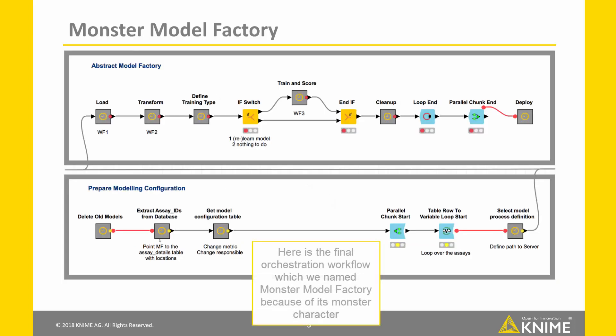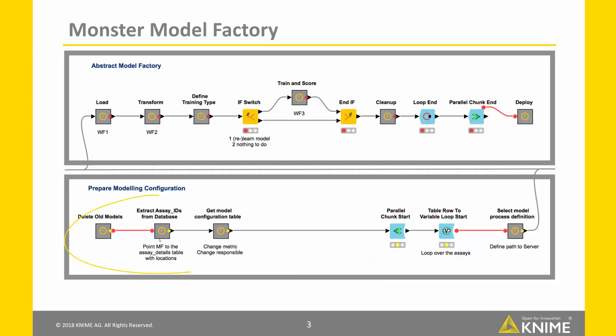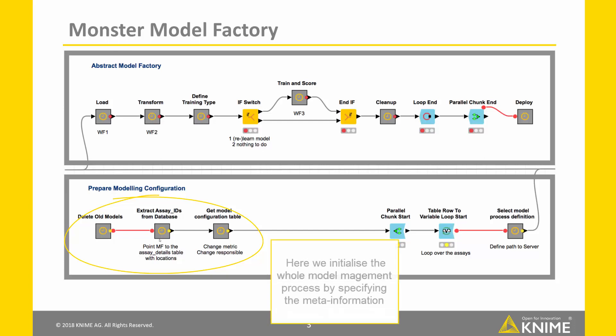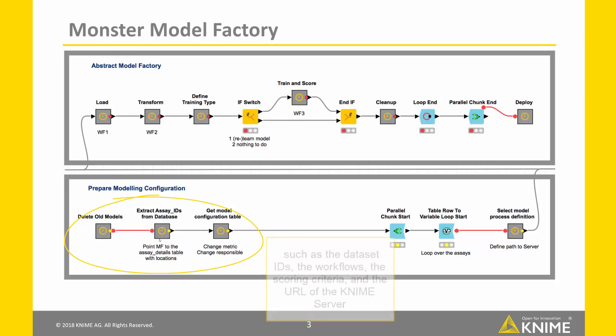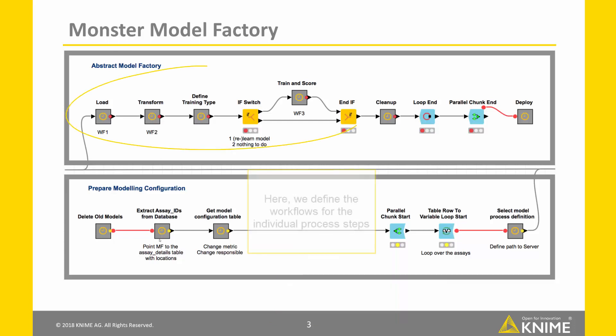Here is the final orchestration workflow, which we named Monster Model Factory because of its monster character. It all starts in the lower part of the workflow, where we initialize the whole model management process by specifying the meta information necessary to automate the process, such as the dataset IDs, the workflows implementing the process steps, the scoring criteria, and the URL of KNIME Server used for the execution. Here we define the workflows for the individual process steps.